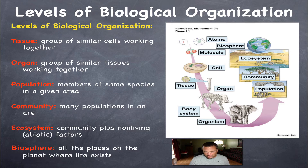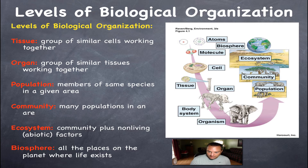When you put a bunch of different populations together, you have a community. In this picture you can see a population of elephants, a population of giraffes, a population of antelopes, and a population of trees.